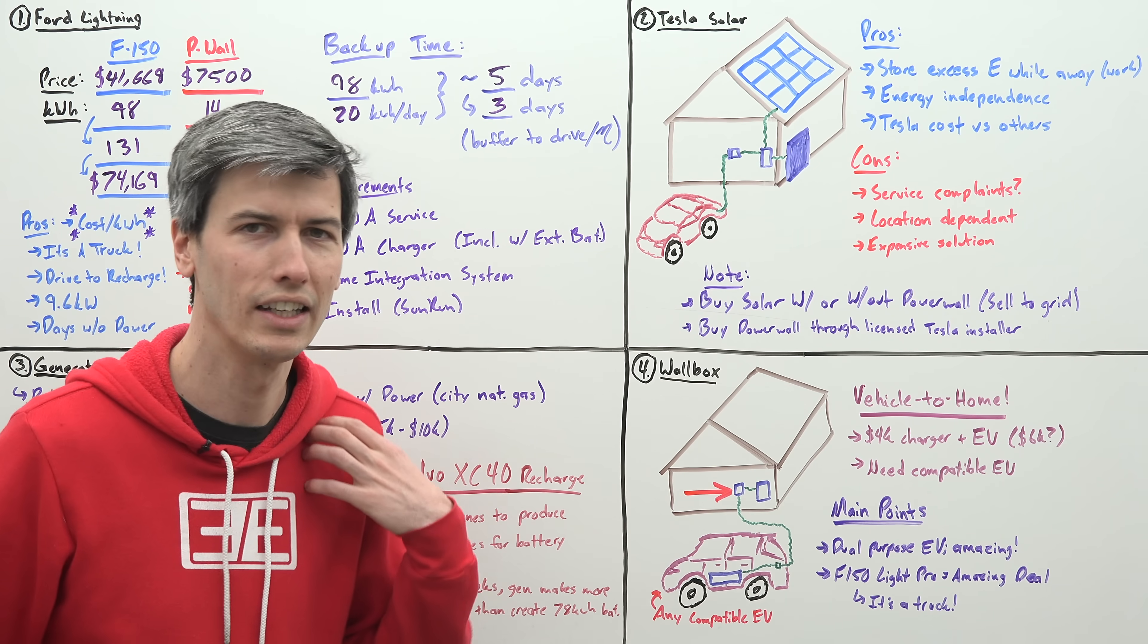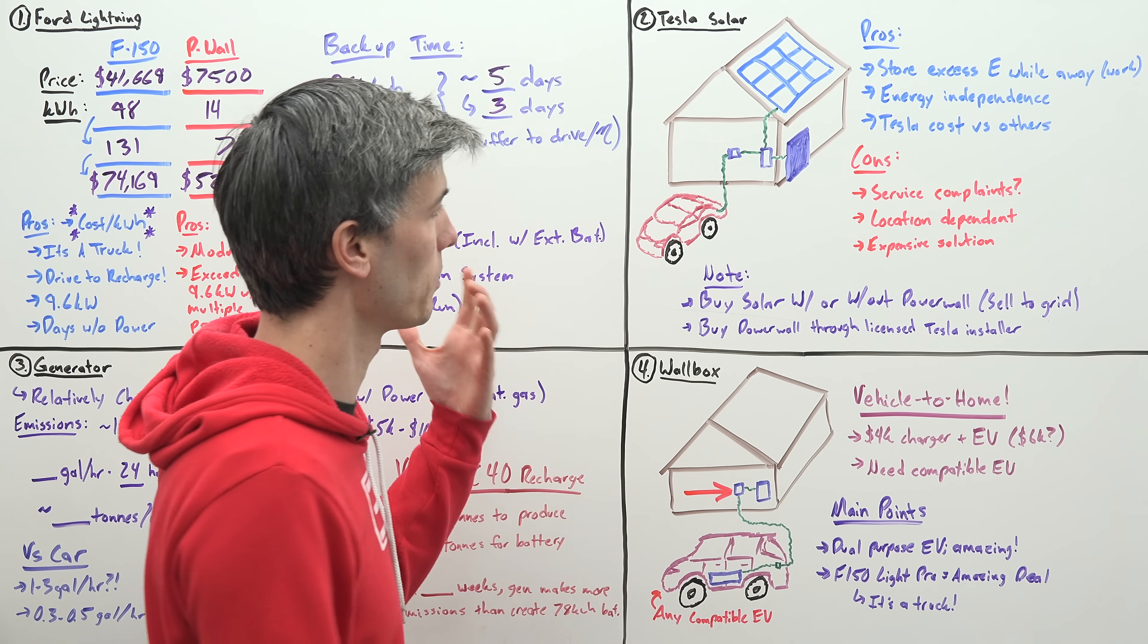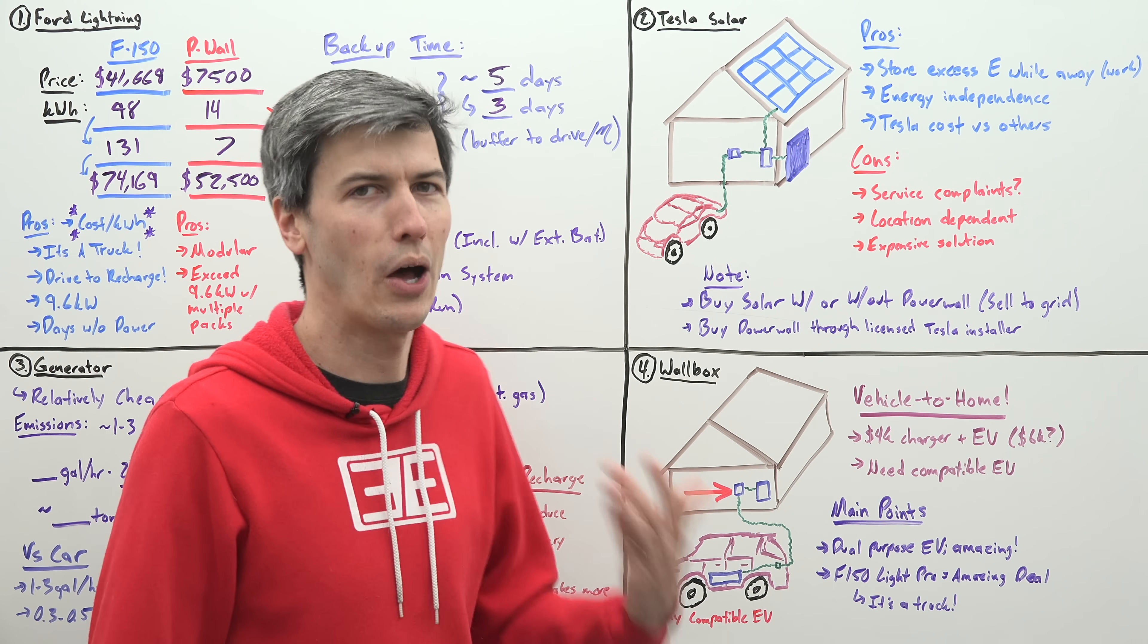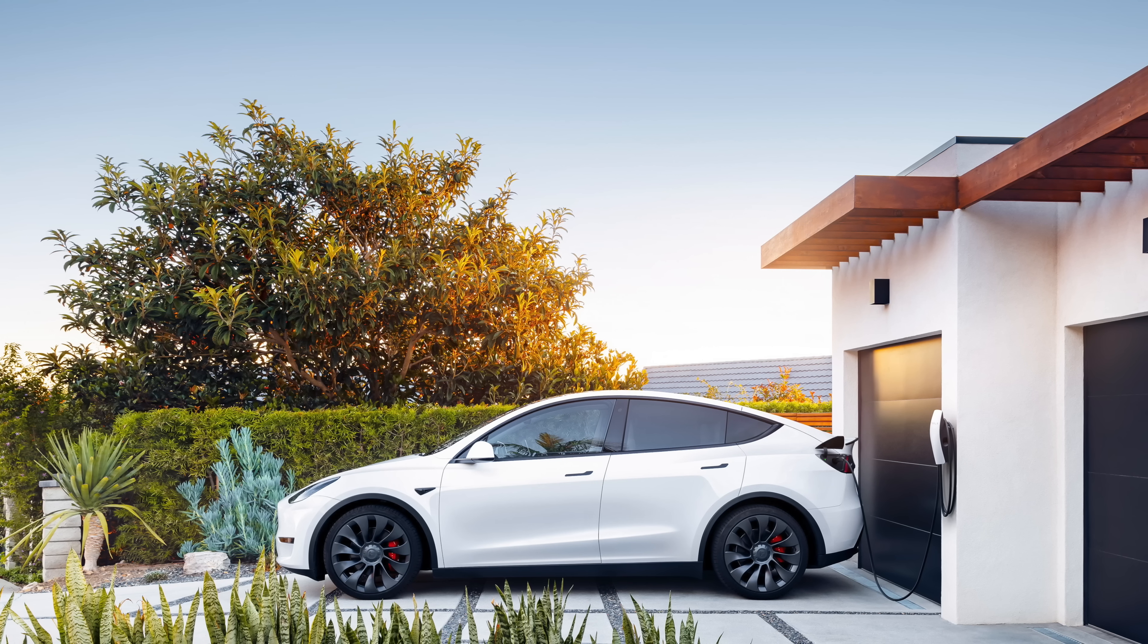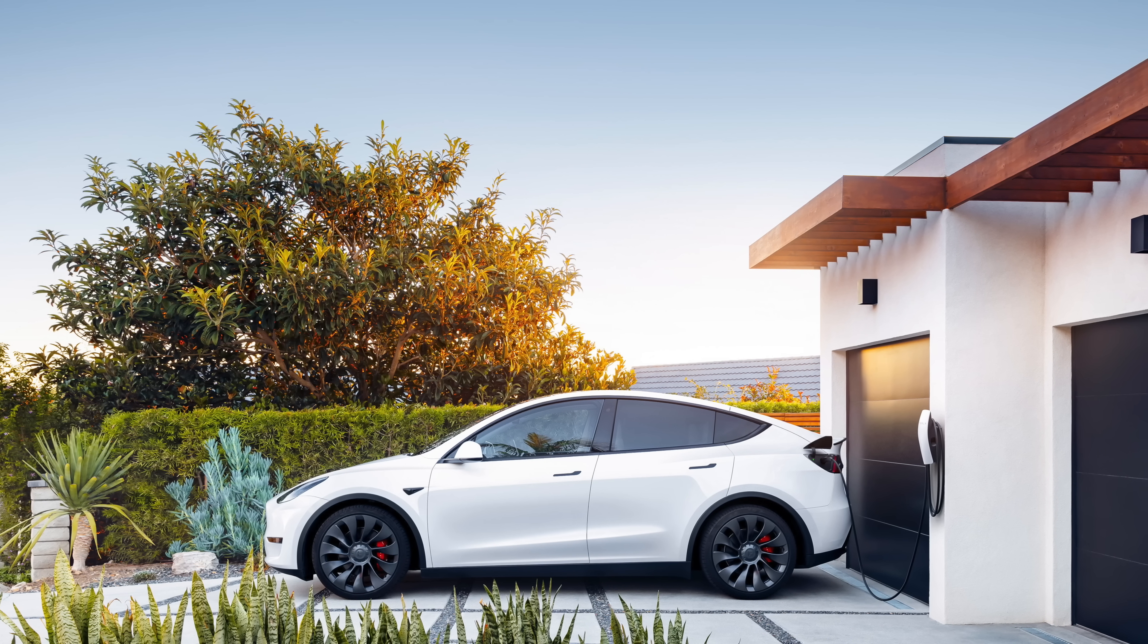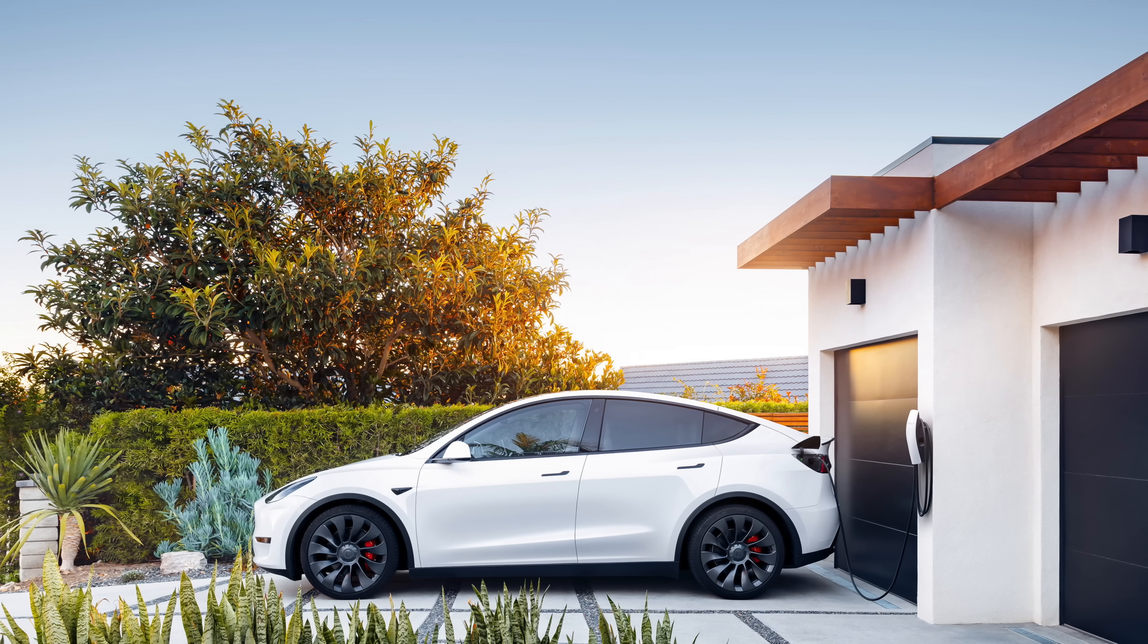And the big advantage Tesla has is their price versus everybody else. It just seems like from a pricing standpoint, Tesla comes in well below everybody else on total system costs for getting a solar system set up on your home. Now, the disadvantages, I've actually looked into getting Tesla solar for my house. I think it'd be really cool. The problem is a lot of people complain about the service. It's kind of the same story with their cars, unfortunately. So a lot of people have had real struggles with their service and that's kind of held me back.